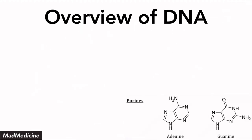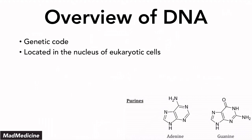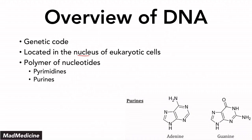Let's discuss DNA really quickly. DNA is our genetic code and it's located in the nucleus of eukaryotes. In prokaryotes, it's located in the cytoplasm. DNA itself is a polymer of nucleotides, and within these nucleotides you have two main classes: pyrimidines and purines, which we're going to be discussing today.